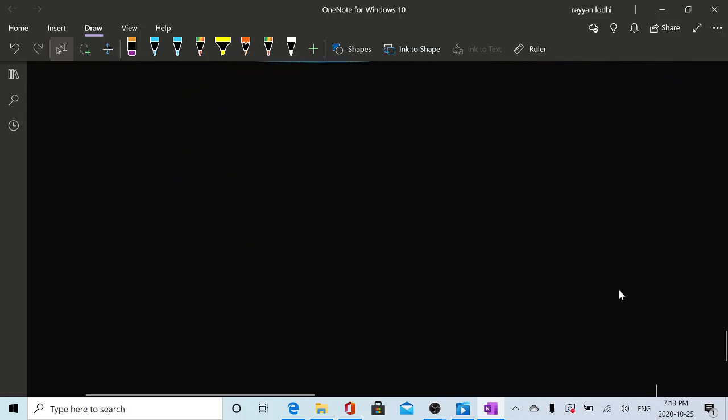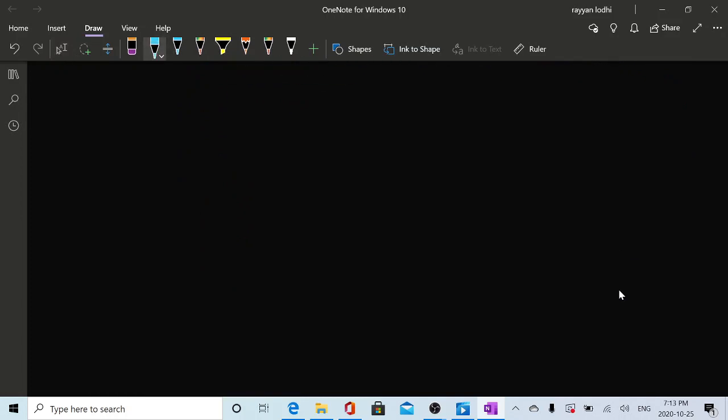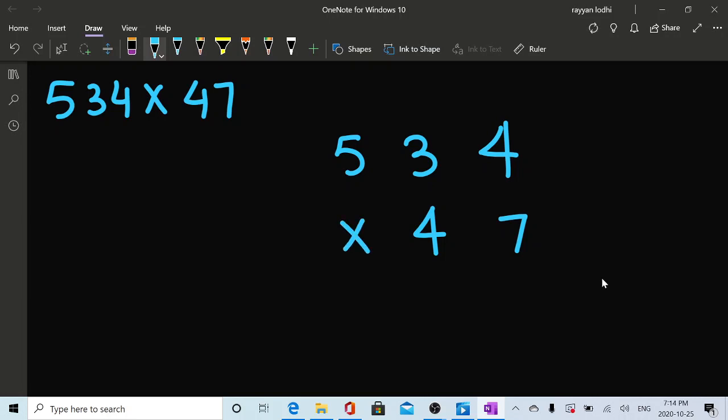I will now take you guys to three digit by two. So let's pick up an example. Let's say we do 534 times 47. I just tried to pick like random numbers so that you can be introduced to different time tables as well. And how will you write it? You will write this 47 as ones under ones and tens under tens.